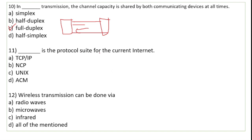Dash is the protocol suite for the current internet. Internet ka jo main protocol hai woh hai TCP/IP — Transmission Control Protocol / Internet Protocol. TCP/IP data ko transmit karta hai from sender to receiver, aur IP devices ko IP address provide karta hai taaki data sahi destination pe pahunch sake.